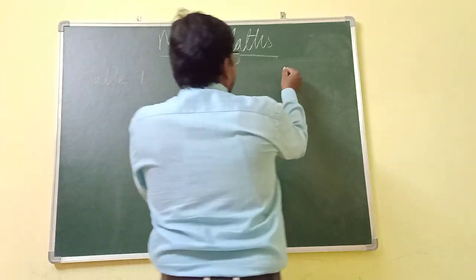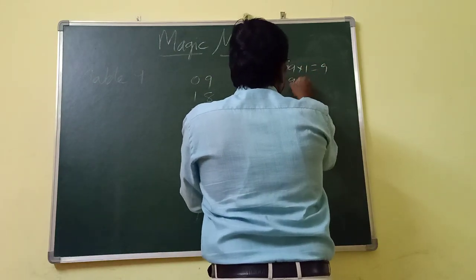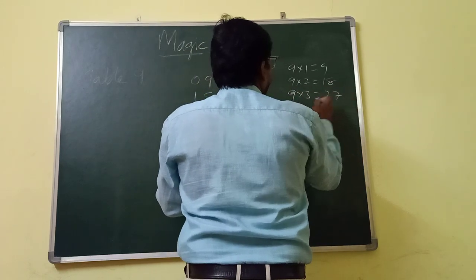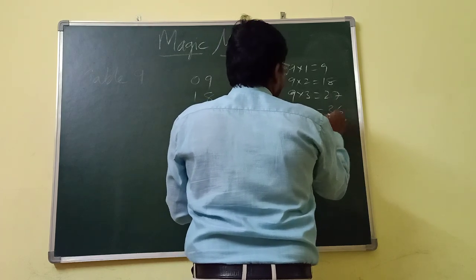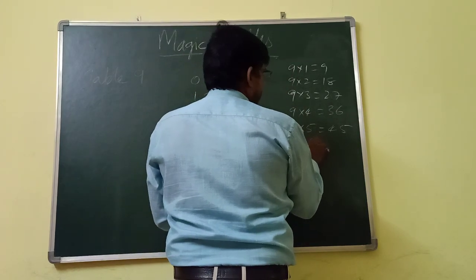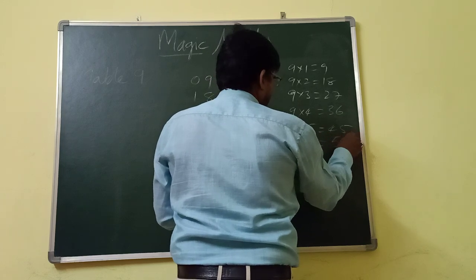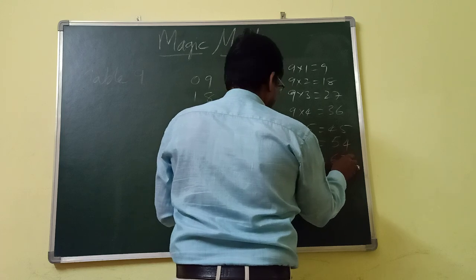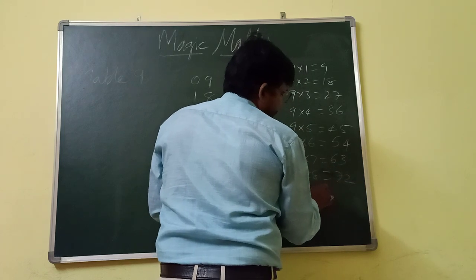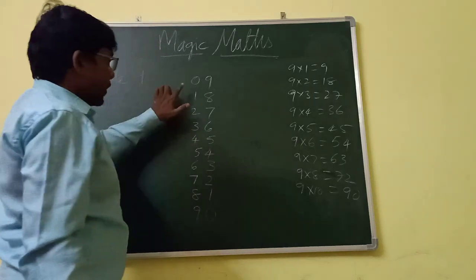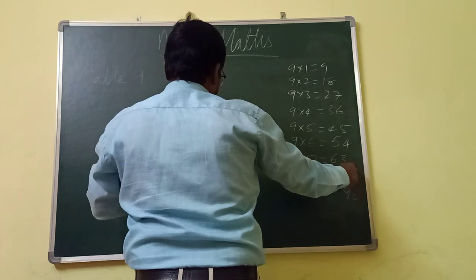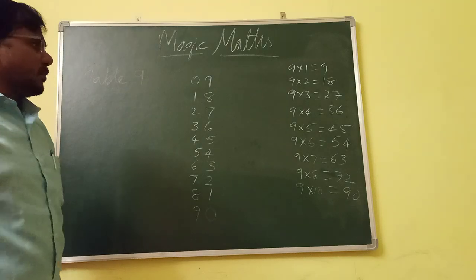Now this is your 9 table, you can check. 9, 1 times is 9. 9, 2 times is 18. 9, 3 times is 27. 9, 4 times is 36. 9, 5 times is 45. 9, 6 times is 54. 9, 7 times is 63. 9, 8 times is 72. And 9, 10 times is 90. 18, 27, 36, 45, 54, 63, 72.